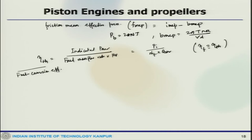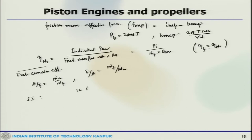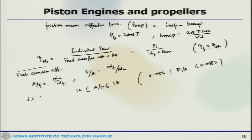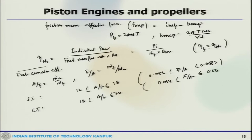We also have air-fuel ratio (A/F) or fuel-air ratio (F/A). For normal operating range, SI engines or gasoline engines have an air-fuel ratio of around 8 to 17.5, giving a fuel-air ratio of 0.056 to 0.0583. For CI engines, this is typically 18 to 70, giving a fuel-air ratio of 0.014 to 0.056.